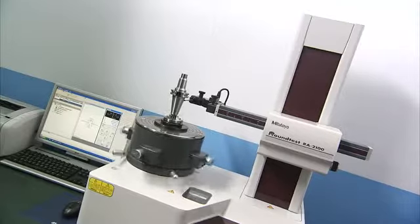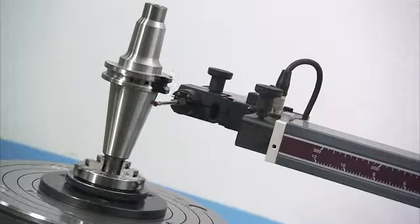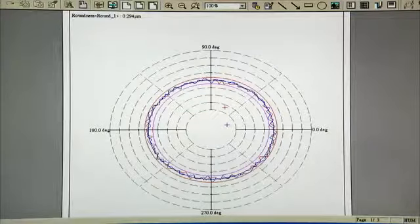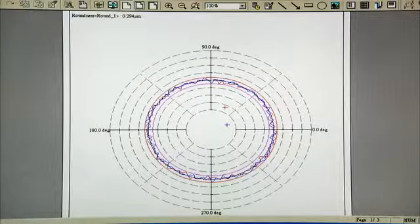These SKS collet chucks are also finely balanced for stable high speed machining and use an internal taper of 4 degrees to provide thicker, stronger clamping and tool rigidity.